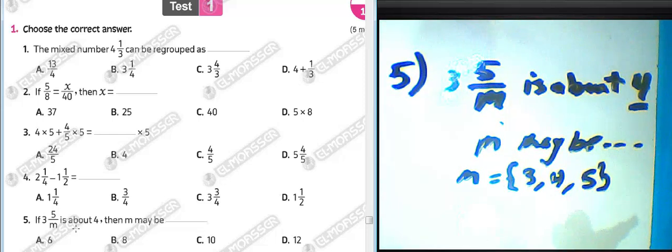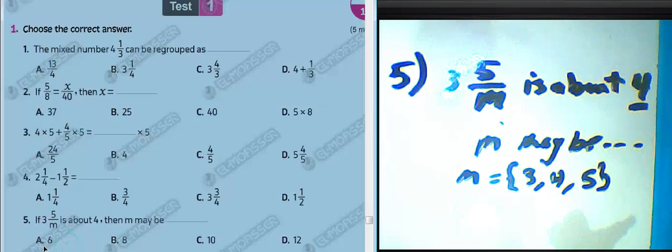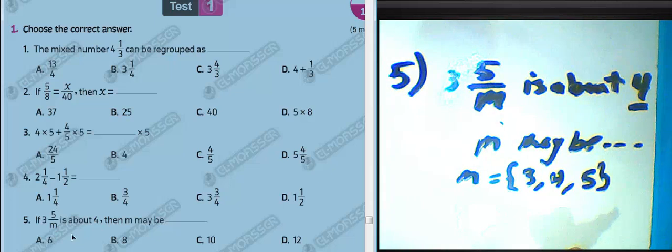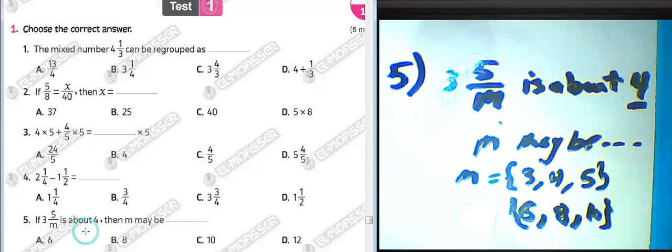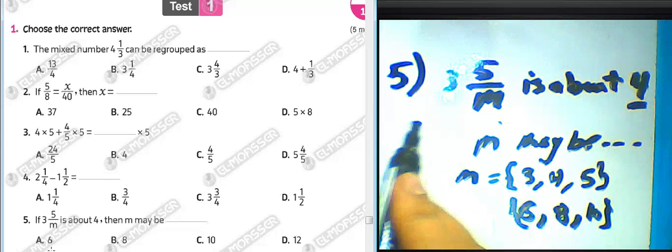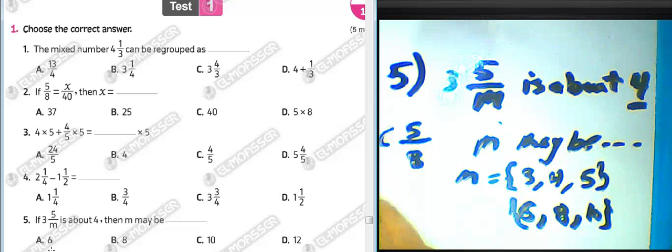Now ask yourself about six: half of six is three. Five is greater than half of the numerator, so the result could be six, eight, or ten. The choices given are six, eight, and ten.